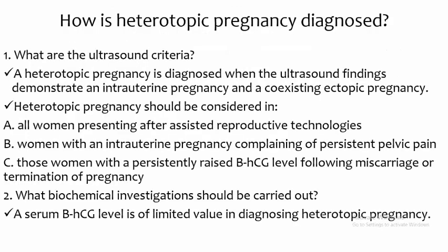How is a heterotopic pregnancy diagnosed? A heterotopic pregnancy is diagnosed when ultrasound demonstrates an intra-uterine pregnancy and a coexisting ectopic pregnancy. Heterotopic pregnancy should be considered in: (a) all women presenting after assisted reproductive technology; (b) women with intra-uterine pregnancy combined with persistent pelvic pain; (c) those with persistently raised beta-hCG following miscarriage or termination of pregnancy. A serum beta-hCG level is of limited value in the diagnosis of heterotopic pregnancy.